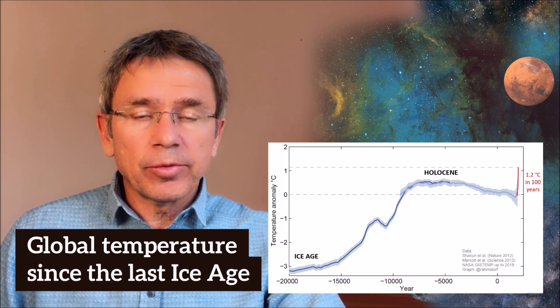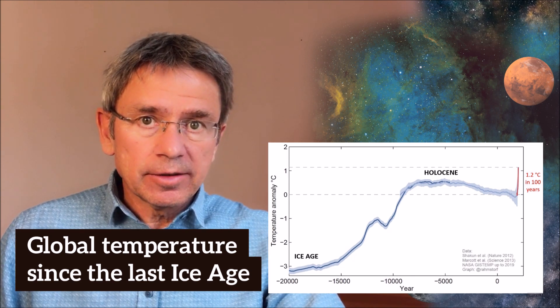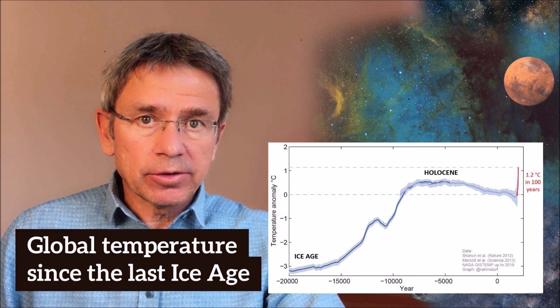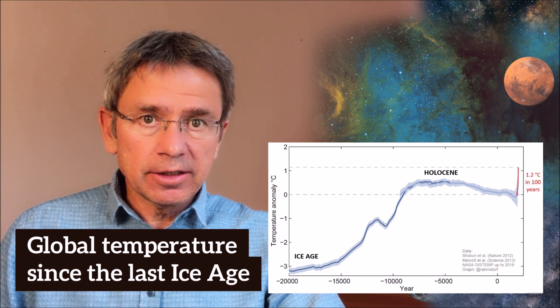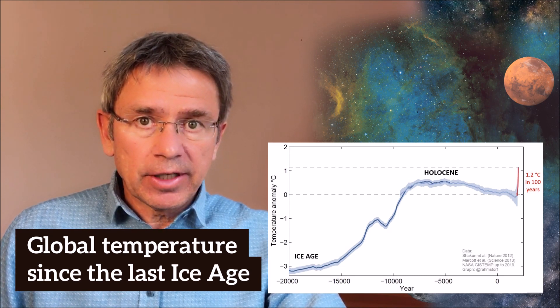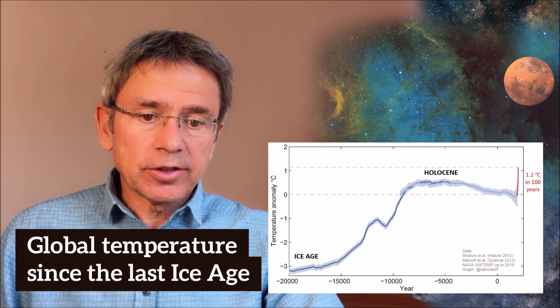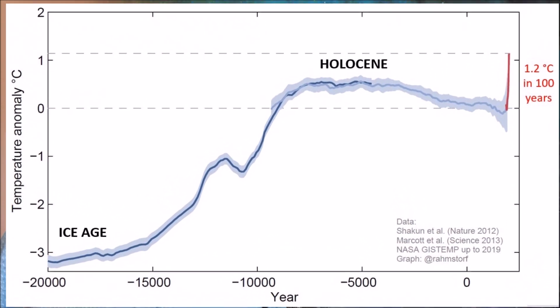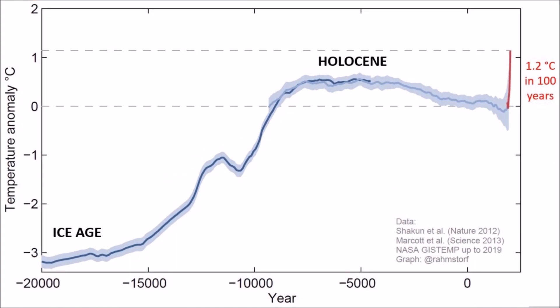From the ice age into the Holocene, we warmed the planet by about four degrees, and that took about 10,000 years. Then there was a Holocene warm period in the mid-Holocene. After that, we had about 5,000 years of a very slow cooling trend, which would most likely have continued further. If we hadn't suddenly reversed that slow cooling, within 100 years we have undone more than 5,000 years of cooling, and the temperature of the Earth is now warmer than at any time in human civilization.